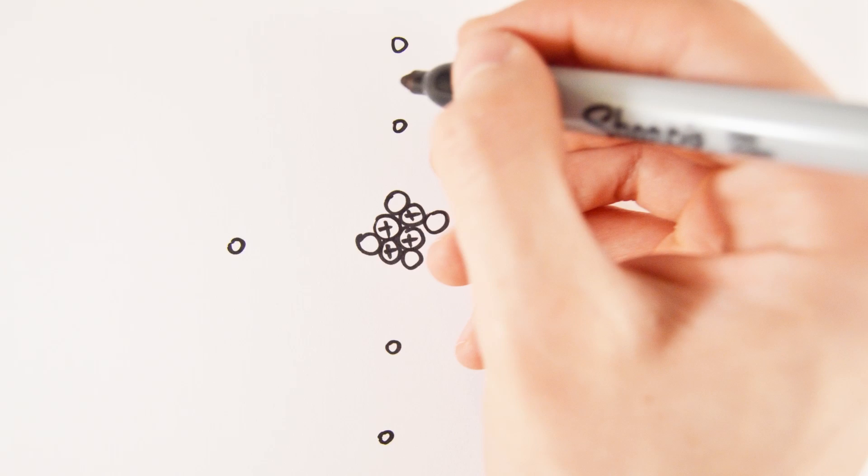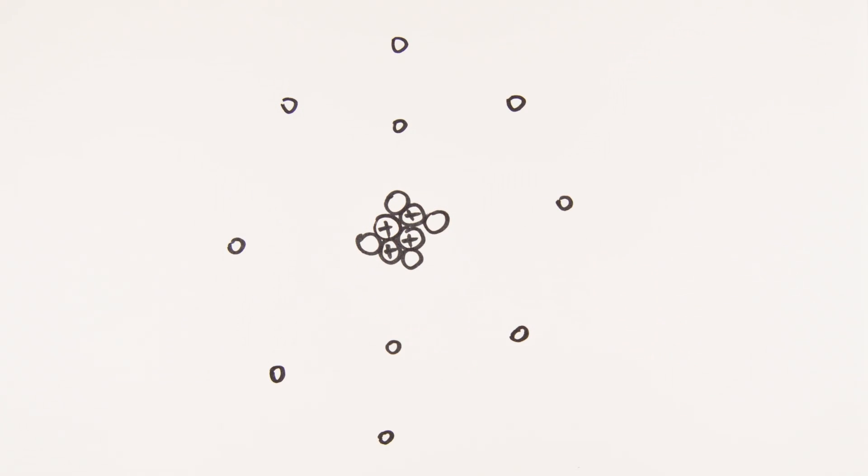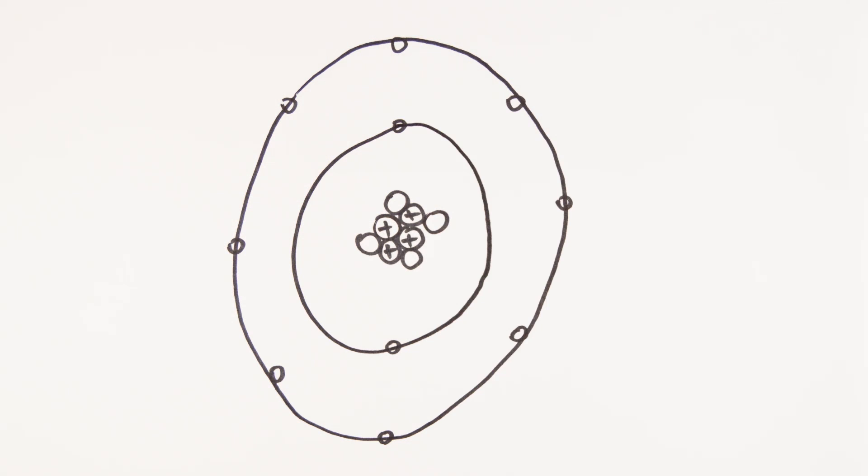The electrons occupy the rest of the space in a sort of electron cloud. They are arranged in energy levels around the nucleus and for the purposes of understanding, they are drawn in orbits. But this is not the case in reality.